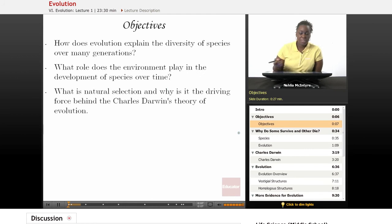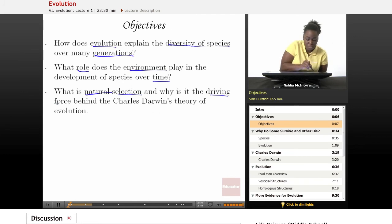Our objectives for this lesson will be: number one, how does evolution explain the diversity of species over many generations? Number two, what role does the environment play in the development of species over time? And number three, what is natural selection and why is it the driving force behind Charles Darwin's theory of evolution?